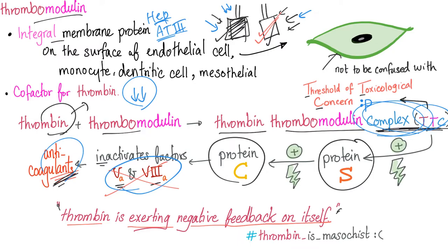See how genius thrombomodulin is? Thrombomodulin — my hero — decreased the amount of thrombin and at the same time created a complex that inhibits coagulation. Thrombin literally means the protein of coagulation — "-in" means protein, and "thromb-" means thrombosis. When there is no thrombin, there is no clot. It's not going to happen.